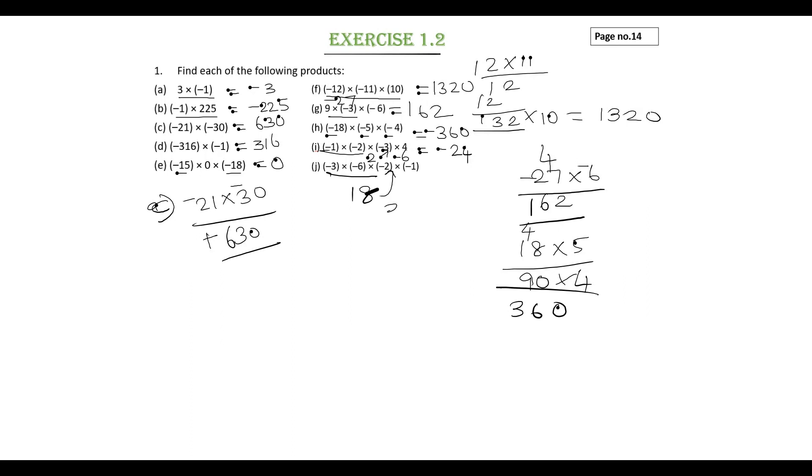j subdivision: minus 3 into minus 6 into minus 2 into minus 1. Minus 3 into minus 6 is 18, 18 into minus 2 is minus 36, minus 36 into minus 1 is plus 36.